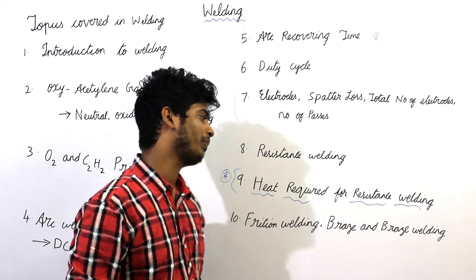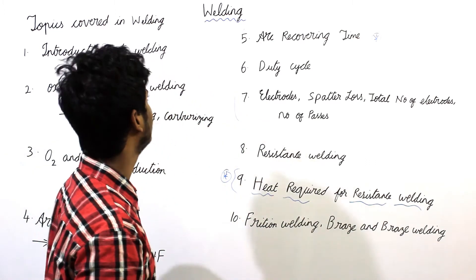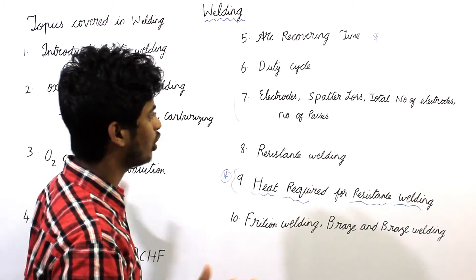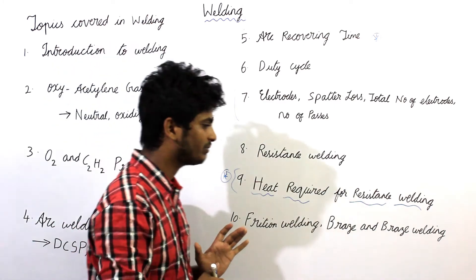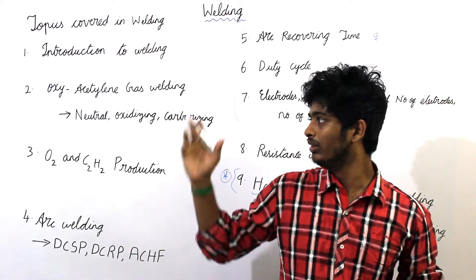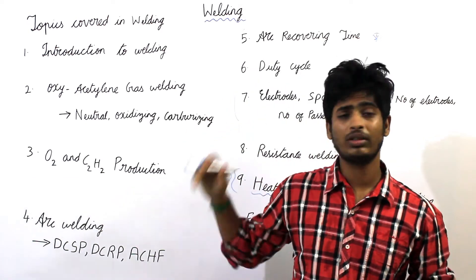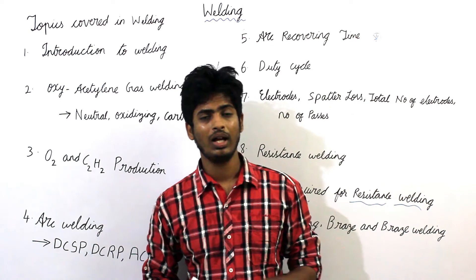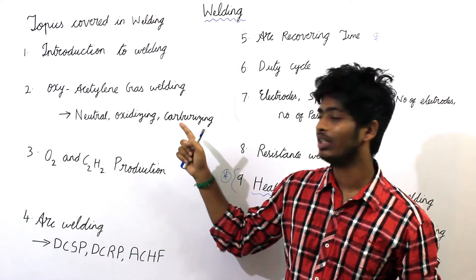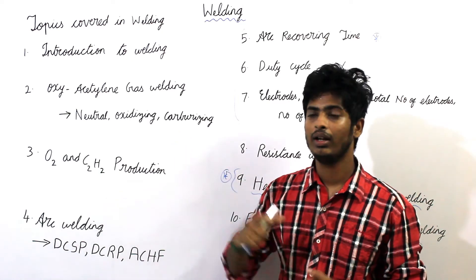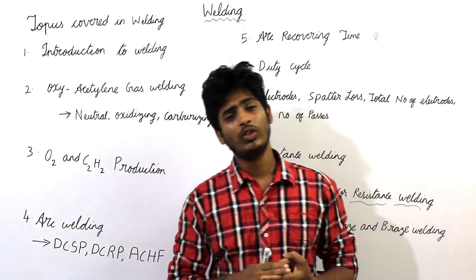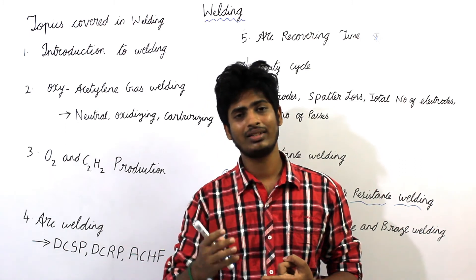The last topic is brazing and brazing welding. For the GATE exam there are many topics for welding process, but when it comes to problem-solving, these topics are more than enough. Other than this, you also have to study the types of oxygen and acetylene welding process, and there are many types of welding process you have to study and understand.